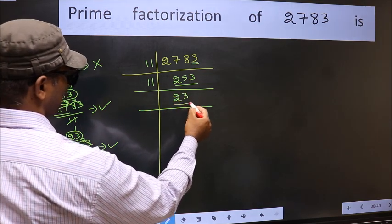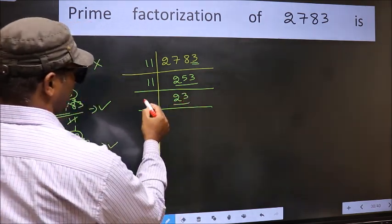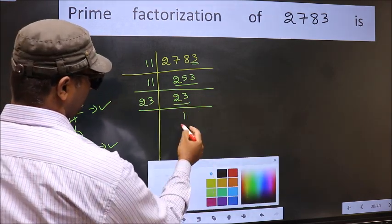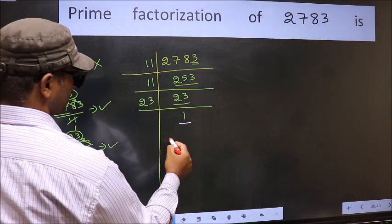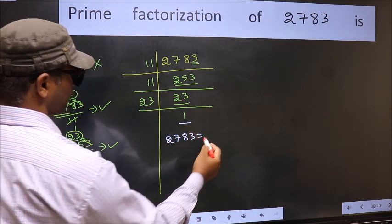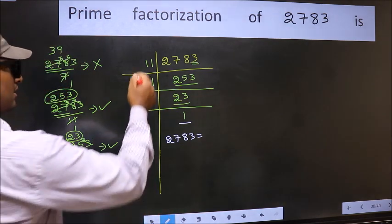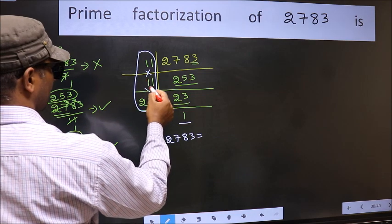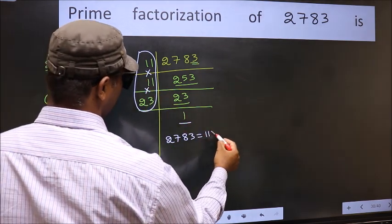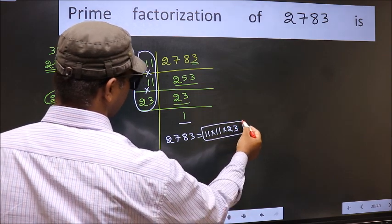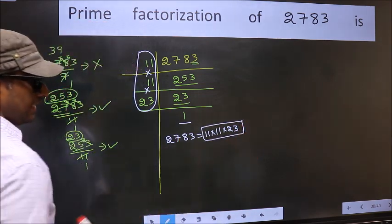Now we have 23. 23 is a prime number. So 23 once is 23. So we got 1 here. So the prime factorization of 2783 is the product of these numbers. That is 11 into 11 into 23. This is the prime factorization of 2783.